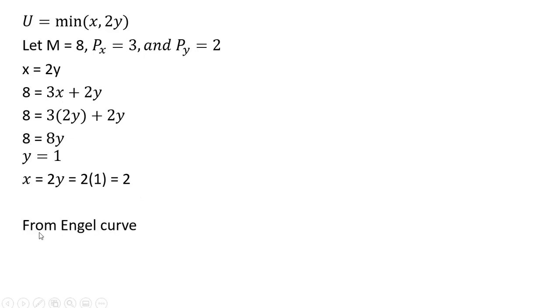If we're to use our Engel curve, where x equals m divided by 4, and if m is 8, we see that x also equals 2. So we get the utility maximizing choice here as a function of income, holding the prices constant at $3 and $2 for good x and good y, respectively.